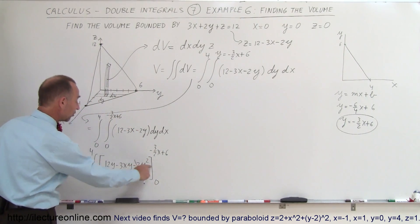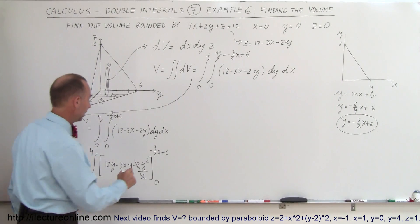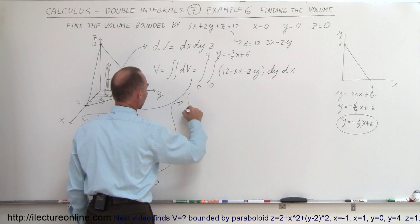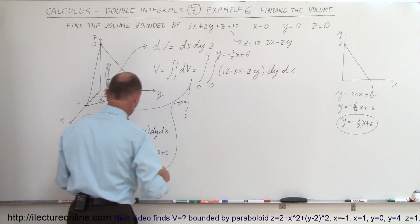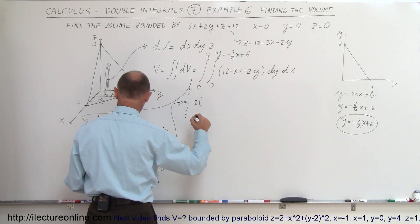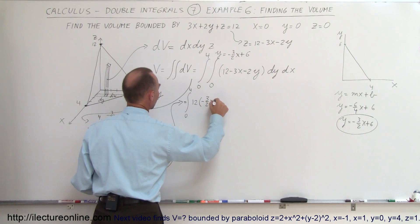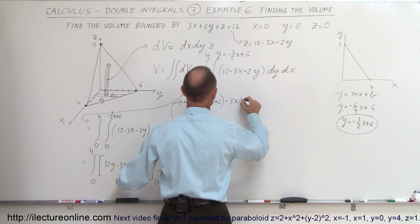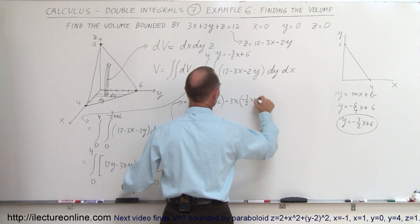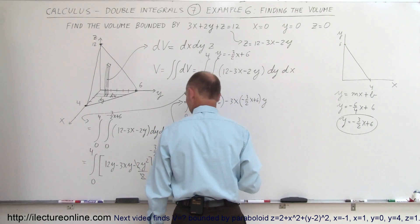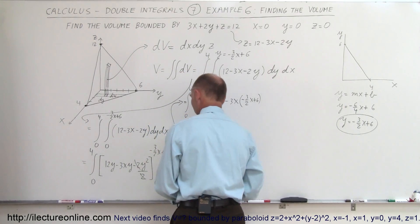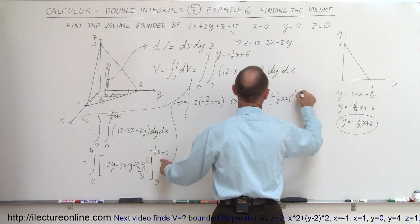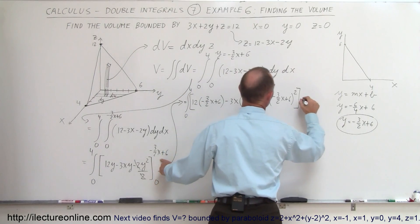When we plug in the lower limit we get zeros, so we only need the upper limit. Plugging in y equals minus 3 over 2 times x plus 6, we get: 12 times (minus 3 over 2 times x plus 6), minus 3x times (minus 3 over 2 times x plus 6), minus the quantity (minus 3 over 2 times x plus 6) squared, all times dx.